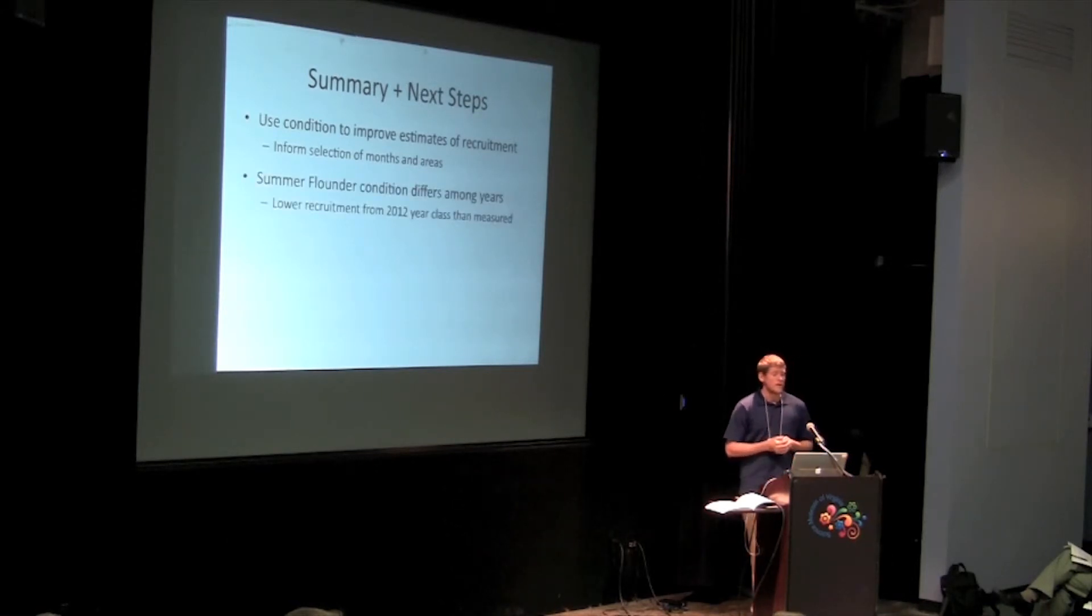For example, we saw that summer flounder condition differed among years. So we may actually expect lower recruitment from the 2012 year class because those individuals were in quite low condition despite the high abundance that we saw.